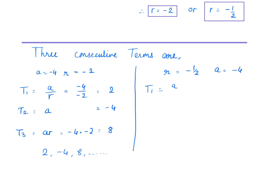With r = -1/2 and a = -4, we get a different set: T1 = a/r = 8, T2 = -4, T3 = 2. Both sets satisfy the conditions: their product is -64 and their sum is 6. Both conditions are verified.